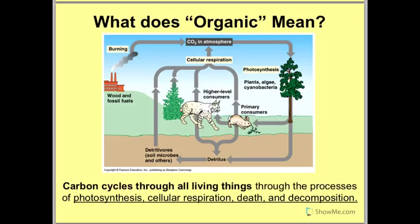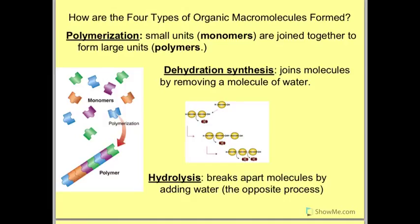When we're thinking about carbon as the base of all these organic molecules, we need to think about how it cycles through all living things through processes like photosynthesis and cellular respiration, death and decomposition — carbon is there and cycling through the world. So, just a quick little background on how these four types of organic macromolecules are formed. There are a few different chemical processes I want to talk about quickly, and then we can move on to naming these molecules.